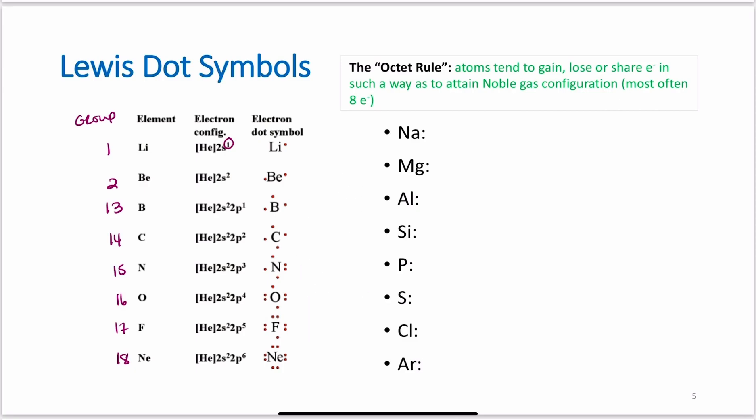The octet rule, again, atoms tend to gain, lose, or share electrons in such a way to obtain the noble gas configuration, which is most often eight electrons. It doesn't have to be eight. It could be more than eight. It could be in hydrogen's case, in helium's case, less than eight, just two. But generally speaking, the octet rule is what atoms are going to follow.